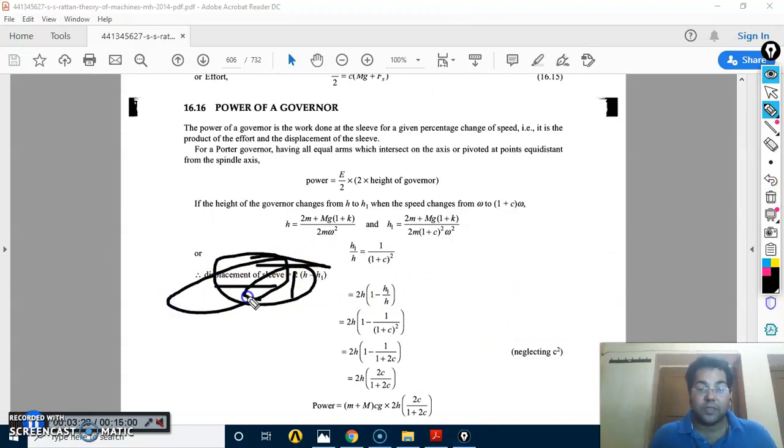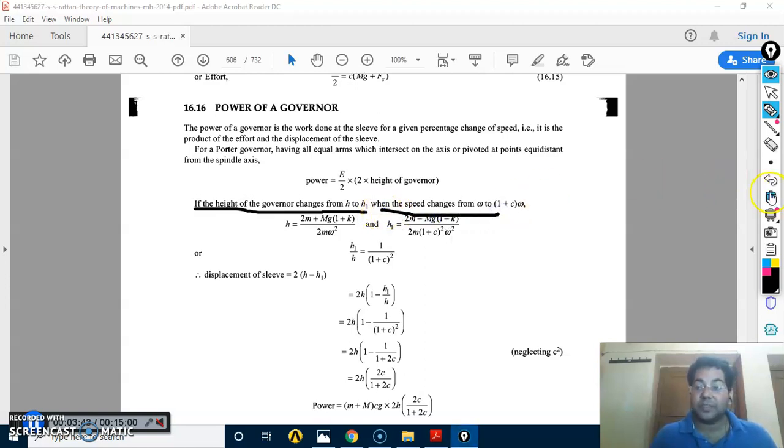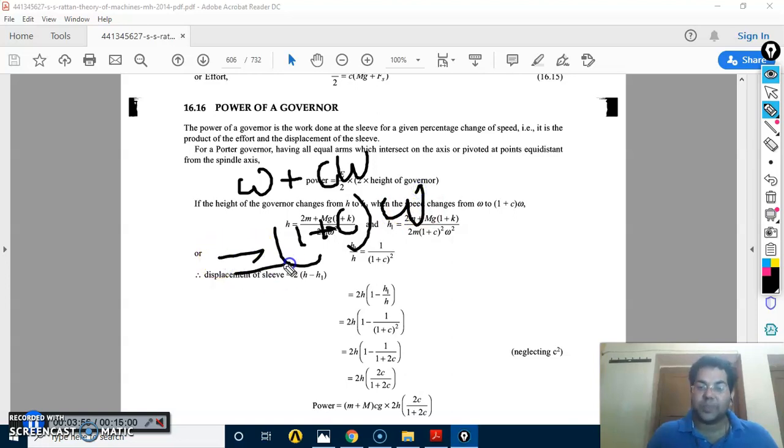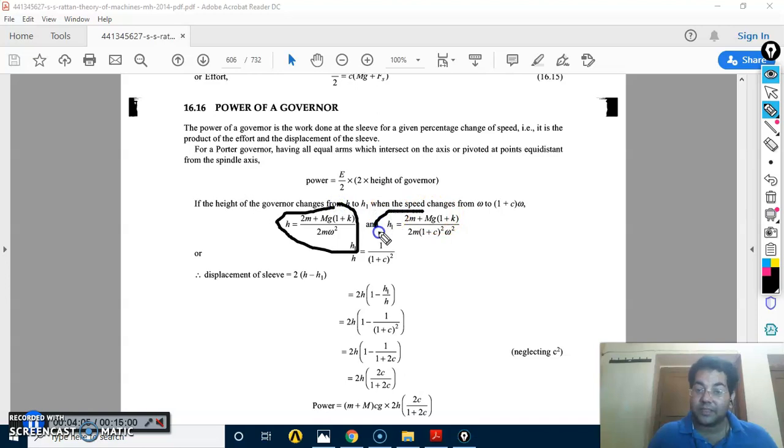This is called displacement of the sleeve. Now at first standard height, W(1 plus c) times W will be the speed. After some time the height will be h1, the speed will be (1 plus c) times W. Now we have two formulas, h and h1, then we divide to get displacement.